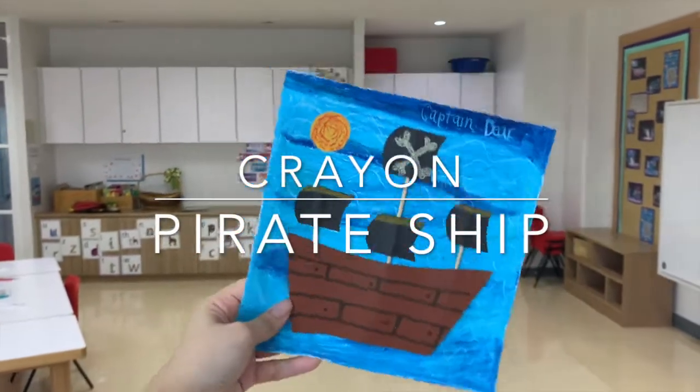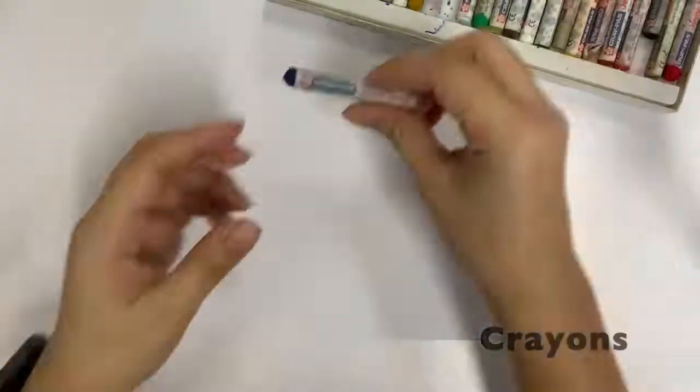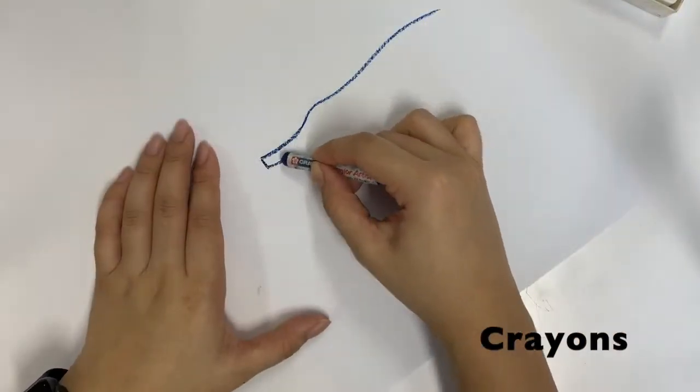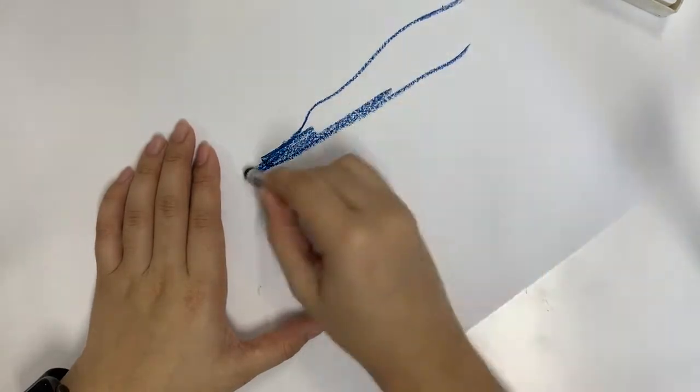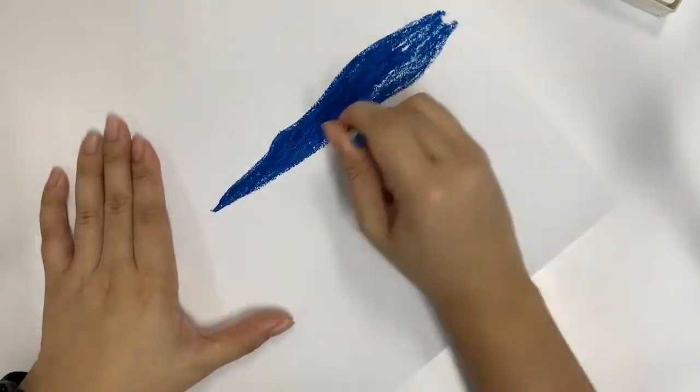Hi everybody, today we are going to make a pirate ship with a pattern on the background. So first you need crayons. Of course, the sea is blue, so you can use any color - dark blue, light blue - but in this clip I'll be adding some green.